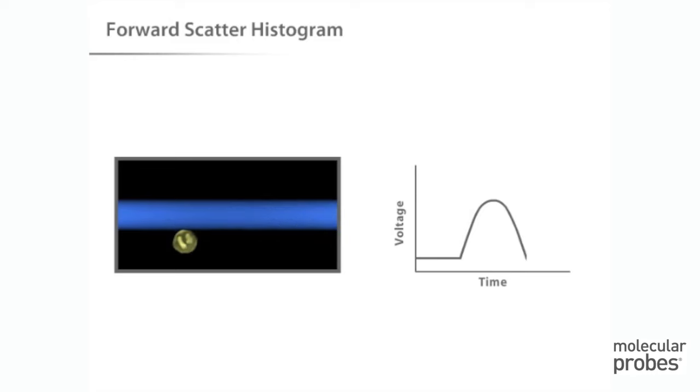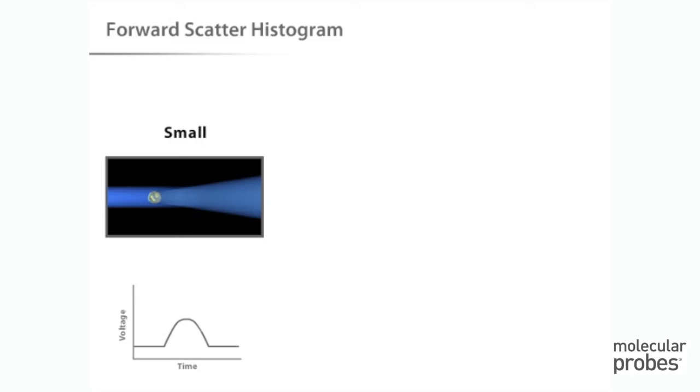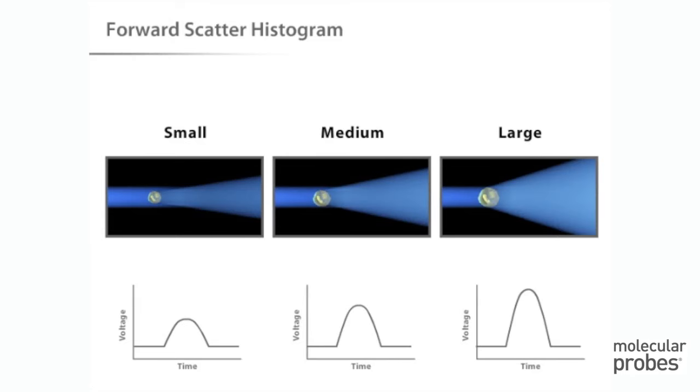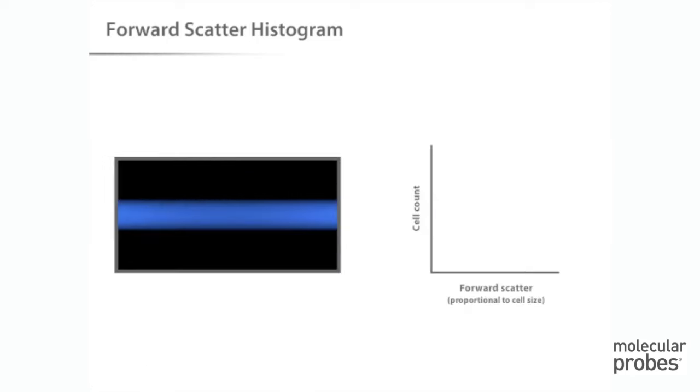The scattered light received by the detector is translated into a voltage pulse. Because small cells produce a small amount of forward scatter and large cells produce a large amount of forward scatter, the magnitude of the voltage pulse recorded for each cell is proportional to the cell size. If we plot a histogram of these data, smaller cells appear toward the left, and larger cells appear toward the right.